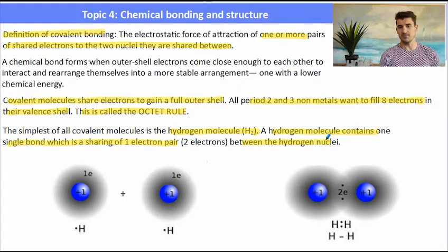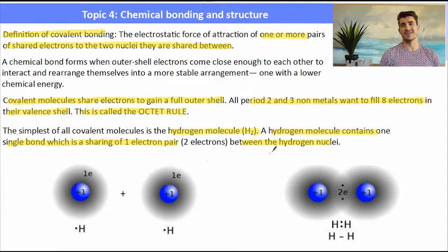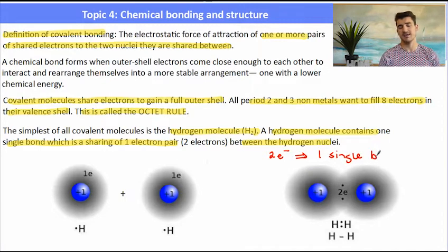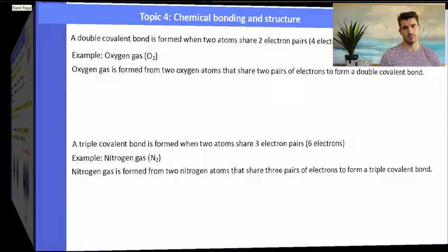The simplest covalent molecule is the hydrogen molecule, where we have two hydrogens. They share one electron each to form a single covalent bond. A single covalent bond contains two electrons, which is one pair — one pair of electrons shared between the two atoms to form a single covalent bond.